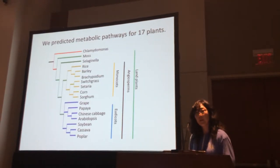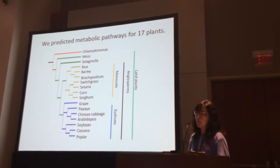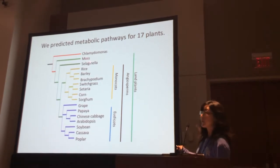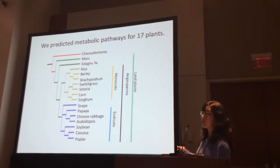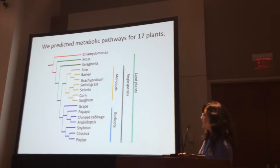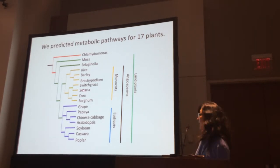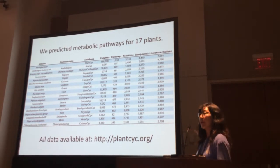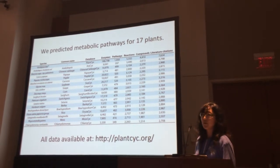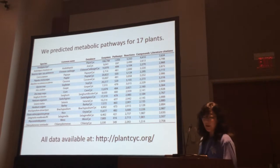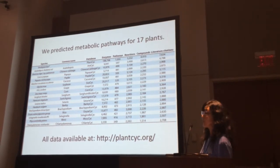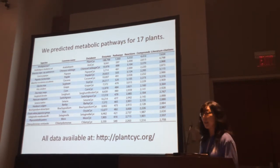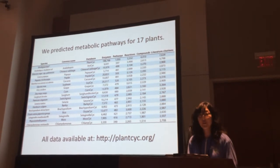Using this pipeline we've generated metabolic reactions and pathways for 17 species including an alga, Chlamydomonas, moss Physcomitrella patens, Selaginella which is a vascular plant, seven species of grasses, and seven species of eudicots. We've identified thousands of enzymes, reactions, and compounds as well as hundreds of pathways for each of these genomes, and all of the data are available online for searching, browsing, and downloading.